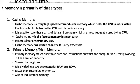Memory is primarily of three types. Cache memory is very high-speed semiconductor memory which helps the CPU work faster — it acts as a buffer between the CPU and main memory. Cache memory is the fastest memory in a computer. However, it stores data only temporarily and is very expensive.